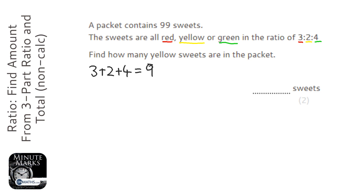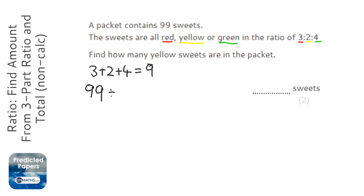Next we need to work out: if we create nine piles of sweets each with the same amount, how much will be in each pile? There are ninety-nine sweets and we want to divide them equally between nine piles, so that means there are eleven sweets in each pile.